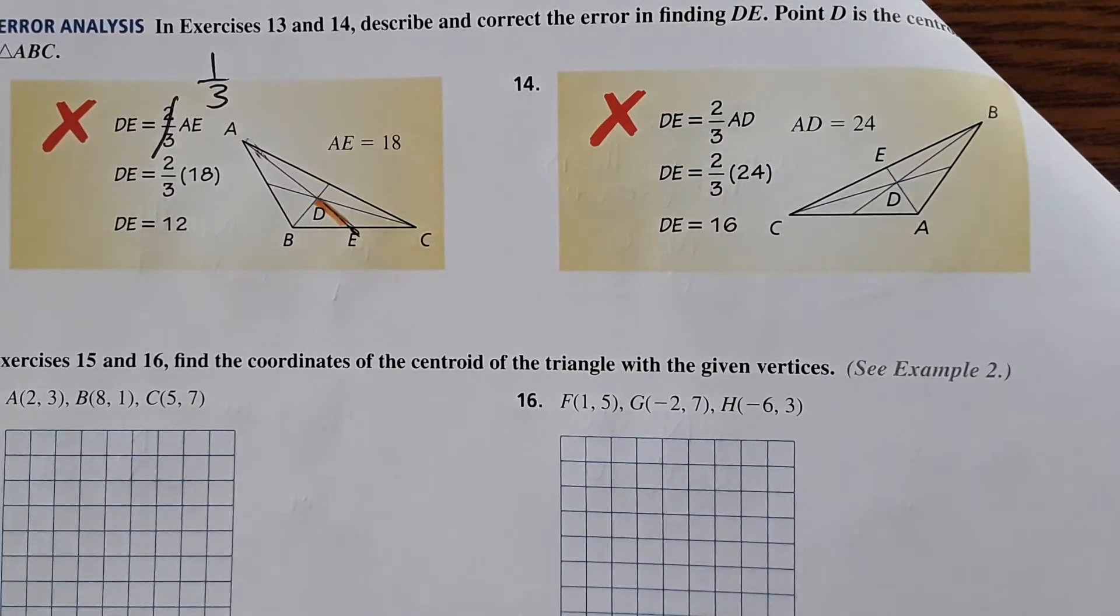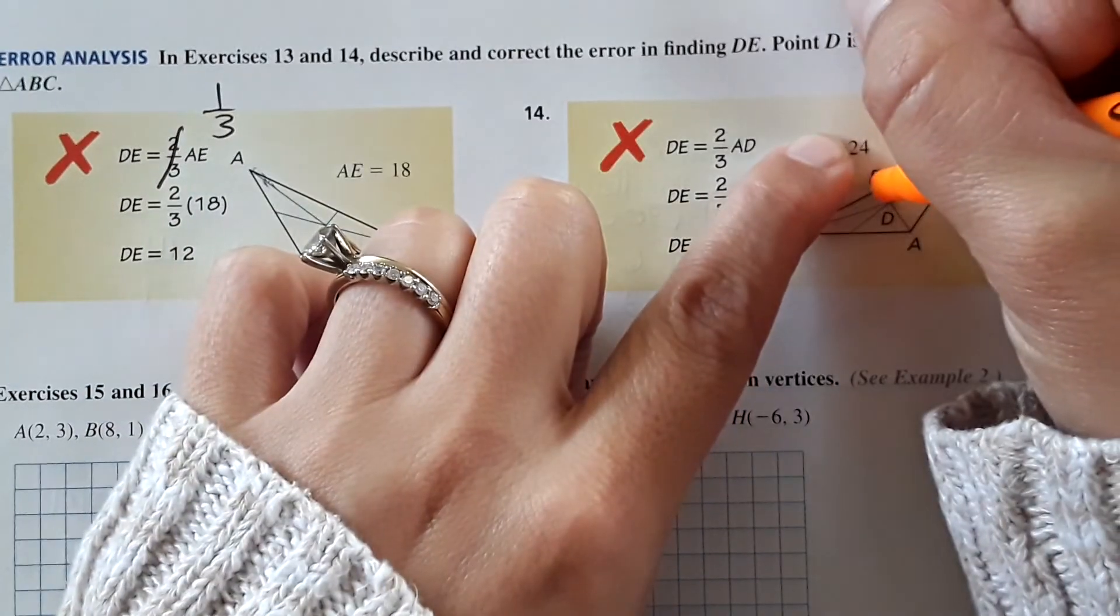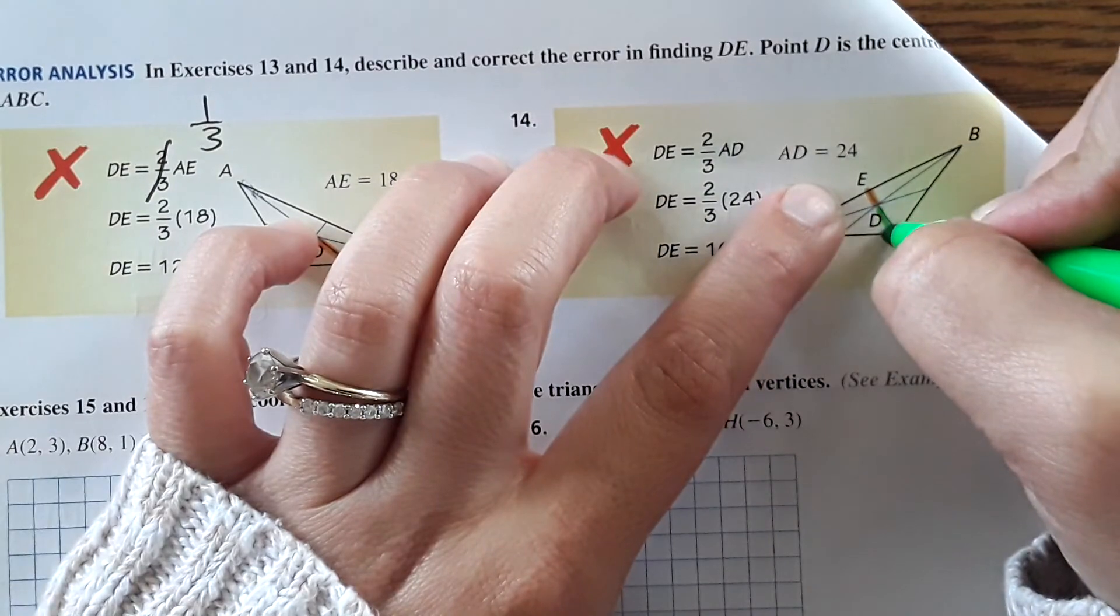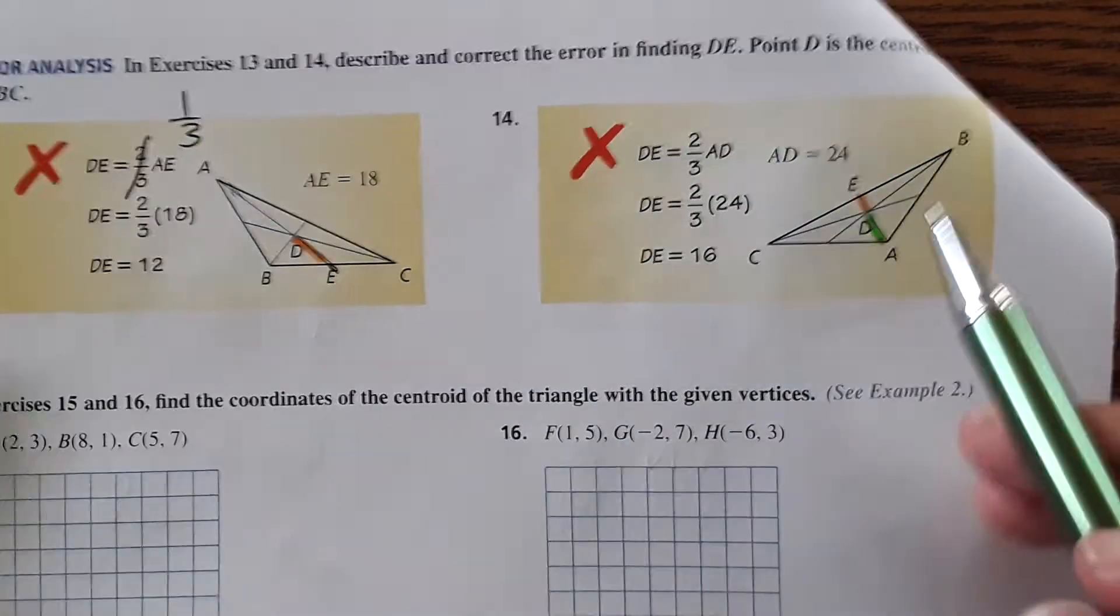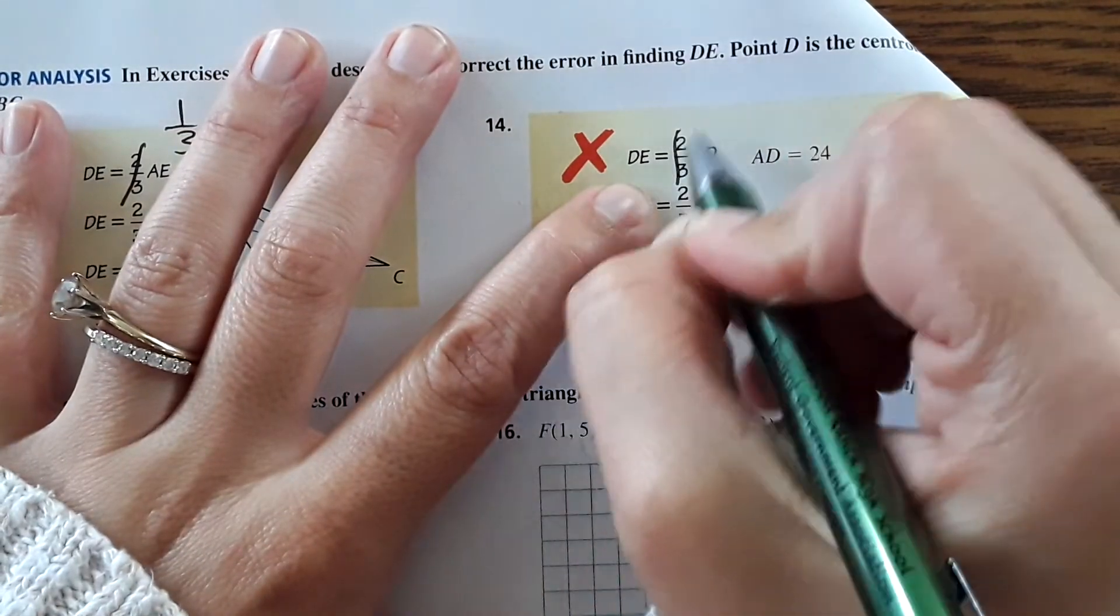And then for 14, it says DE is two-thirds of AD. No, actually DE would be half of AD. So this should be half.